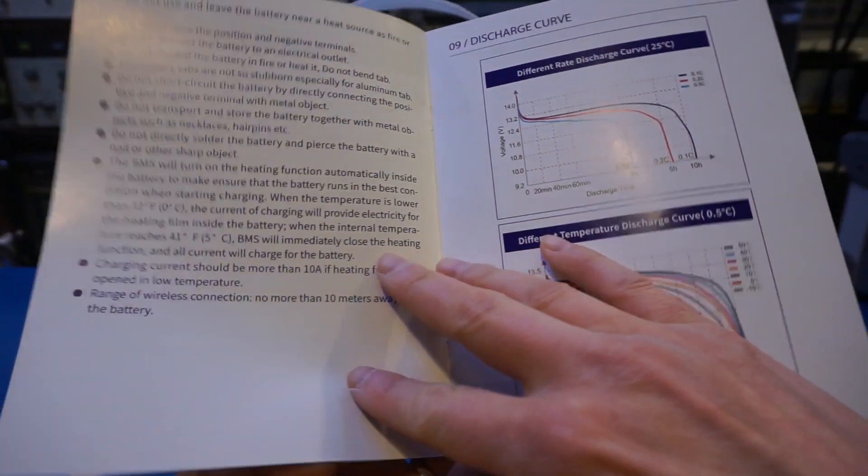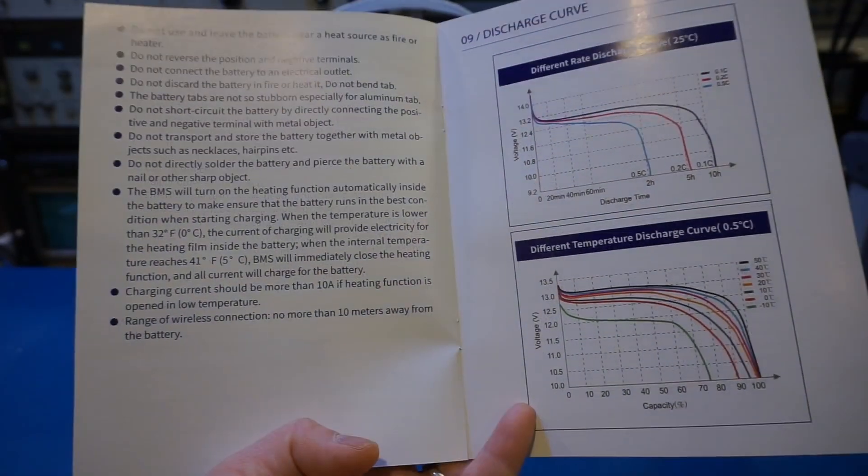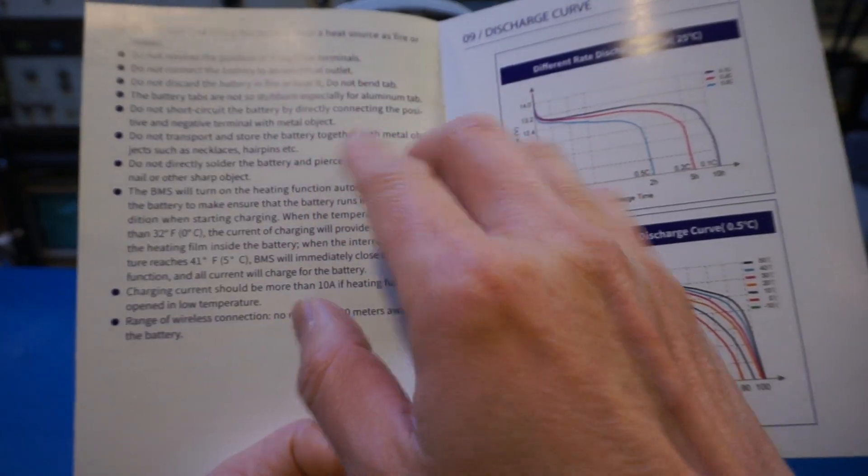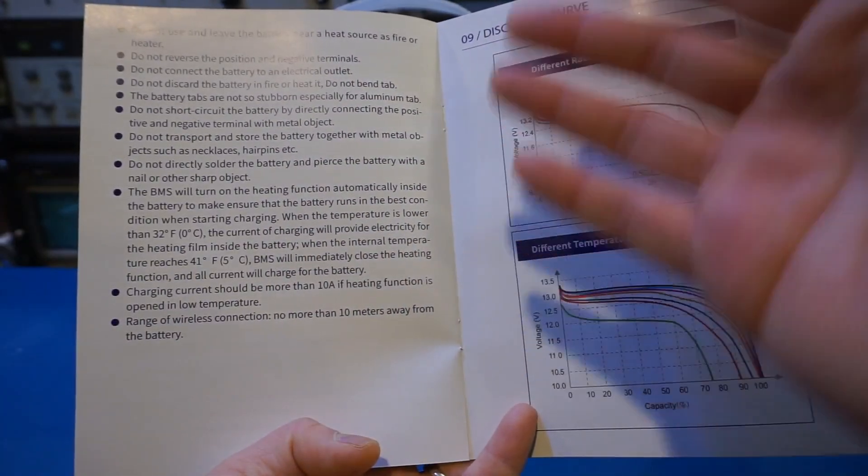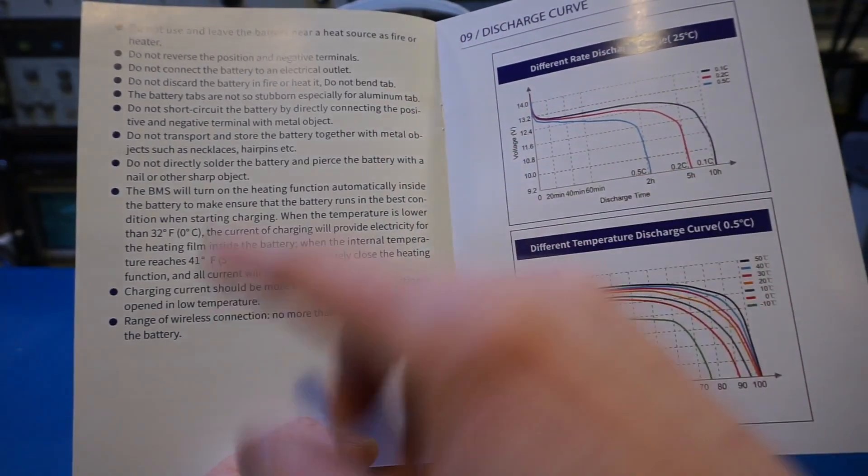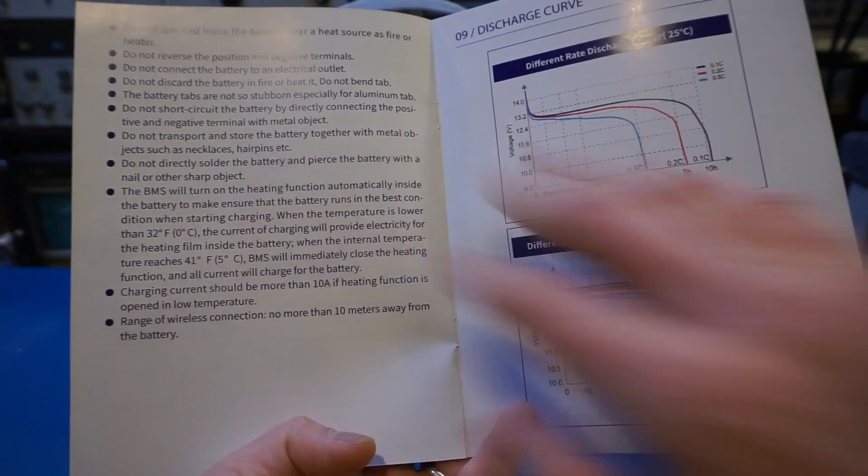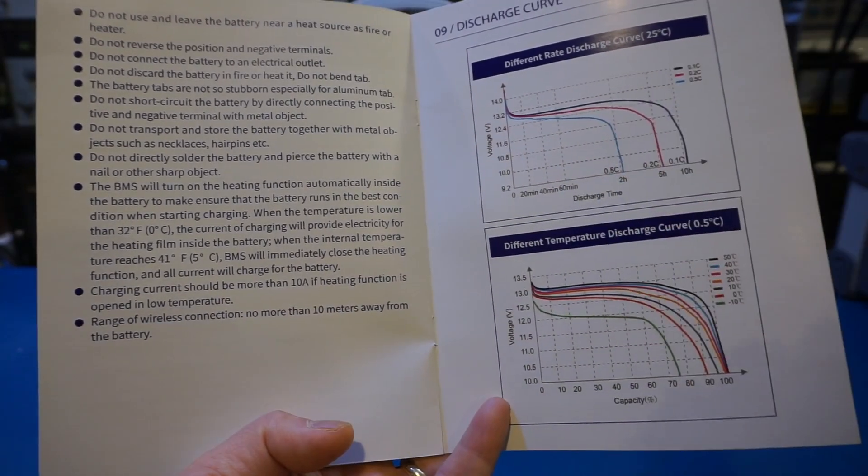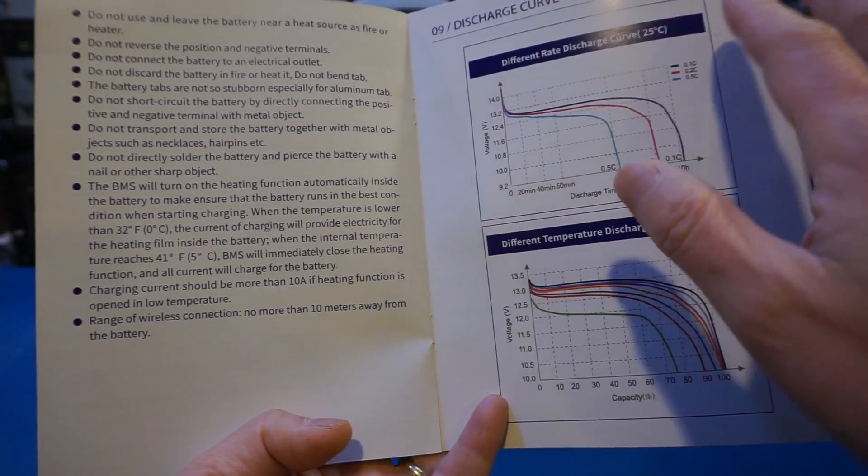Here it's more about the battery BMS, and this paragraph talks about the heating pad. Basically when the temperature is below zero you will use a heating pad to first heat up the battery and then it will start charging. That's what it is talking about here.